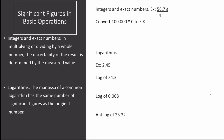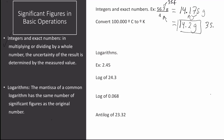The next operation is integers and exact numbers. When multiplying or dividing by a whole number, the uncertainty of the result is determined by the measured value. Looking at the first example, 56.7 grams — a measured value — is divided by 4, a whole number. So 4 is irrelevant, and 56.7 grams has three significant figures, so the final answer must have three significant figures. Dividing these two numbers without rounding gives 14.175 grams. To have three significant figures, we look at the fourth digit — 7 — which is greater than 5, so the 1 is rounded up to give 14.2 grams, which has three significant figures as desired.